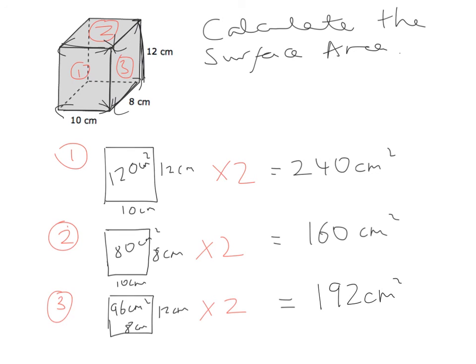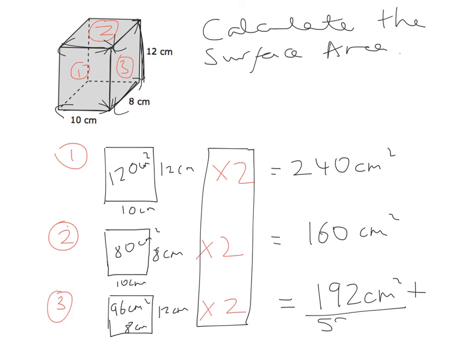I've now calculated the areas of all 6 rectangles — remember, because I've multiplied them all by 2. Adding them all together — 240 plus 160 plus 192 — gives a final answer of 592 centimetres squared. Please make sure you write in the correct units: it's squared and not cubed, because we're calculating area.